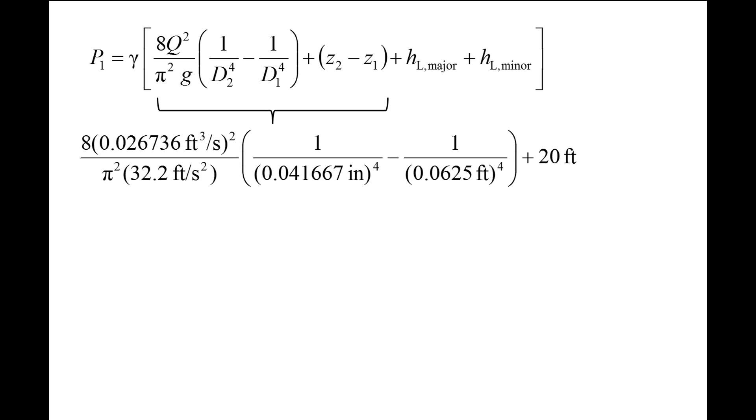Note that only the difference in elevation matters, so you are free to select your datum wherever you like. Plugging in the values for the variables in those two terms, we find that the velocity head changes by 4.79 feet and the elevation head changes by 20 feet.